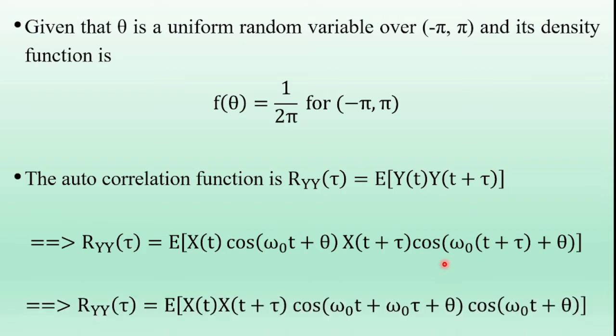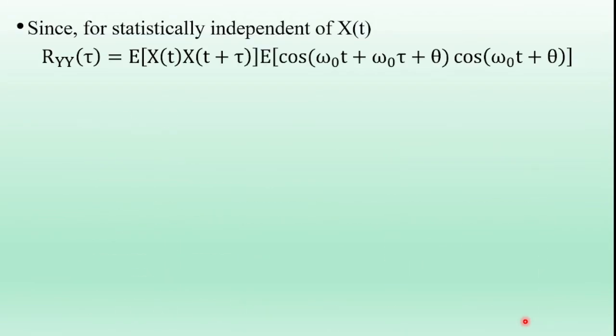That gives R_Y(τ) = E[X(t)·X(t+τ)·cos(ωₒt + ωₒτ + θ)·cos(ωₒt + θ)]. Since X(t) and θ are statistically independent, the RHS can be separated as E[X(t)·X(t+τ)] × E[cos(ωₒt + ωₒτ + θ)·cos(ωₒt + θ)].